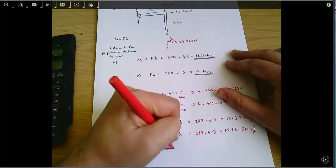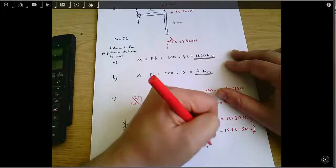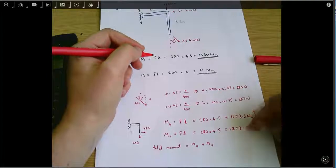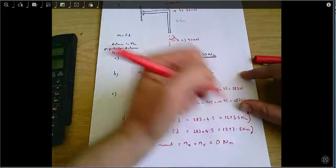And the total moment equals the horizontal moment plus the vertical moment. And since they've got the same magnitude, one is clockwise and one's anti-clockwise, that equals zero Newton meters.